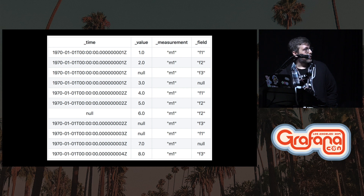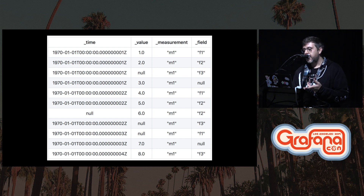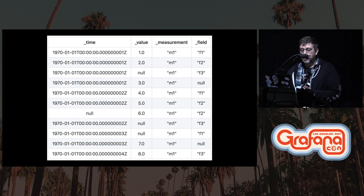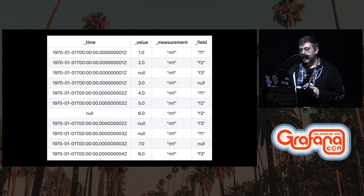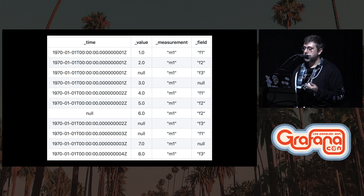Here's an example with simple sample data. We've got timestamps, values, a field called underscore-measurement which is all measurement m1, and then underscore-field which varies from f1, f2, f3, and null. What we want to do in this use case is instead of presenting the data vertically — where f1, f2, and f3 are all in a vertical arrangement — we want to apply a pivot so that those individual fields get transformed into their own columns.